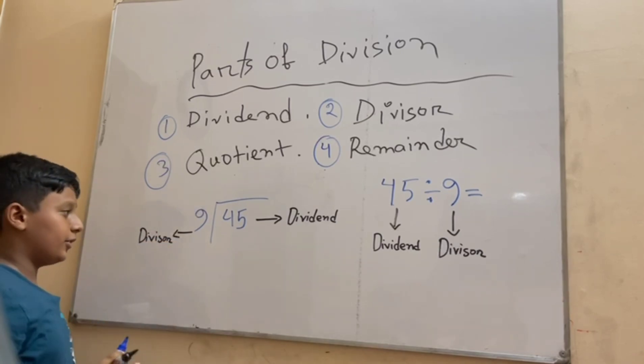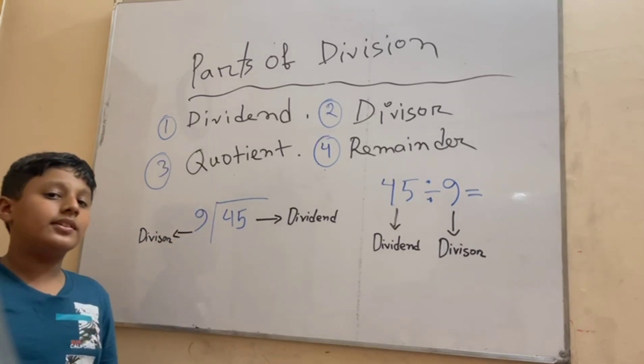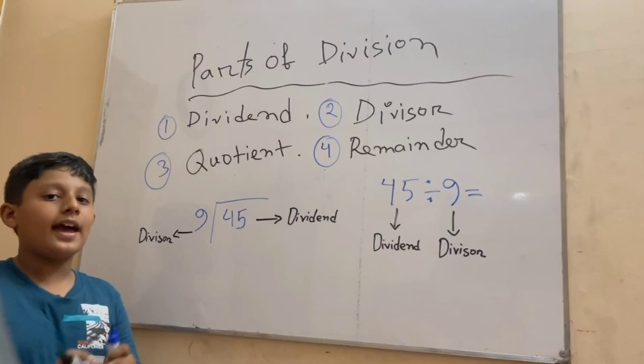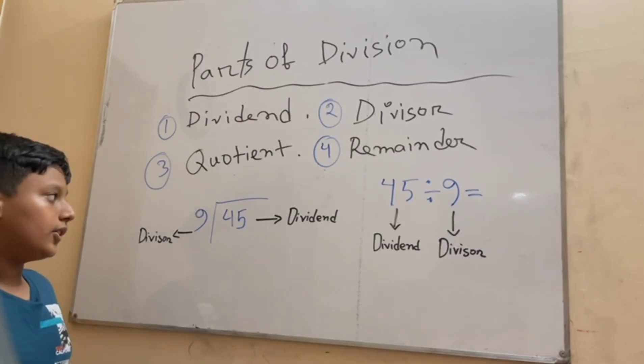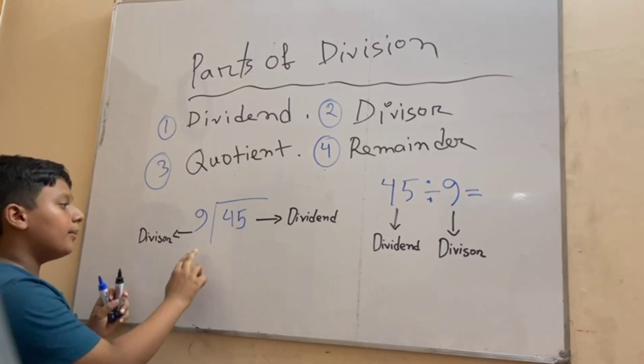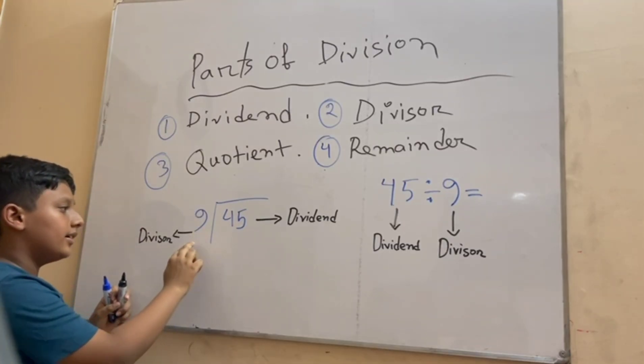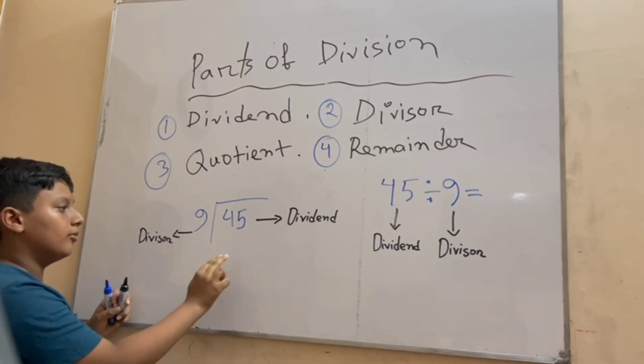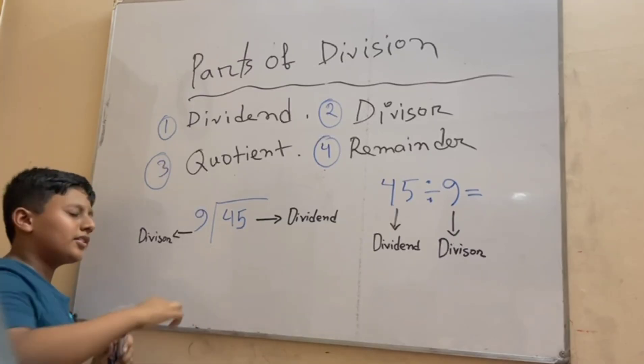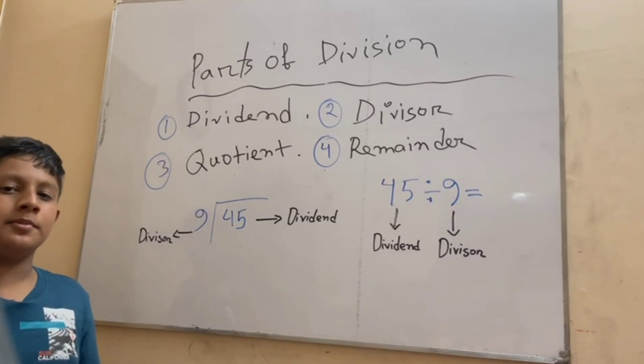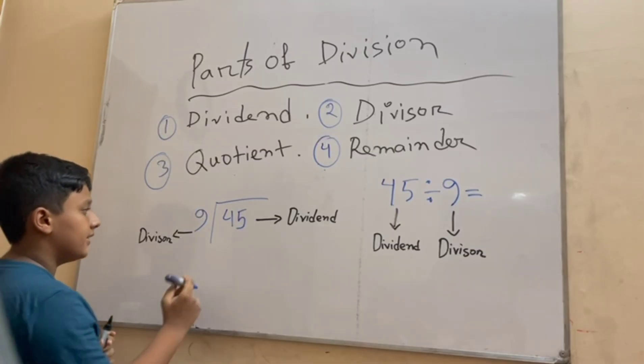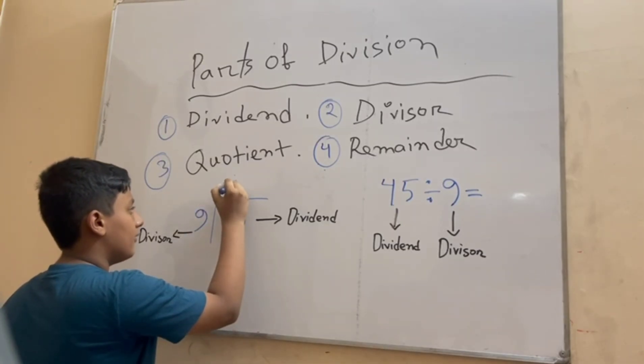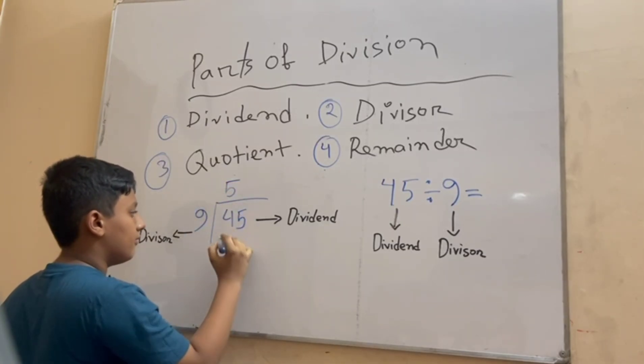Now let's do the division. 9 times 1 is 9, 9 times 2 is 18, 9 times 3 is 27, 9 times 4 is 36, 9 times 5 is 45. So we have to check how many times will it take for 9 to become 45 or almost close to it. But we already got 45 in the 9 times table. 9 times 5 is 45. So let's write it: 9 times 5 is 45.